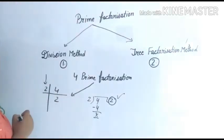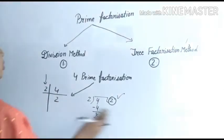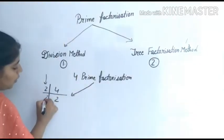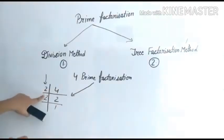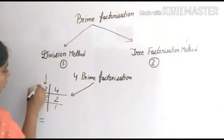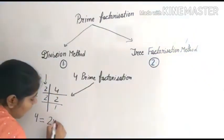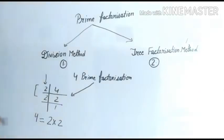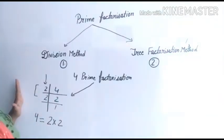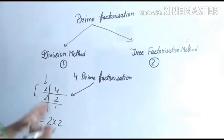Where is the table? 2 will be divided. 2 means 2. Let me tell you, what is the factor of 4? 2 multiplied by 2 — this is the factor of 4. So this is the division method. Which method was it? The division method — prime factorization.